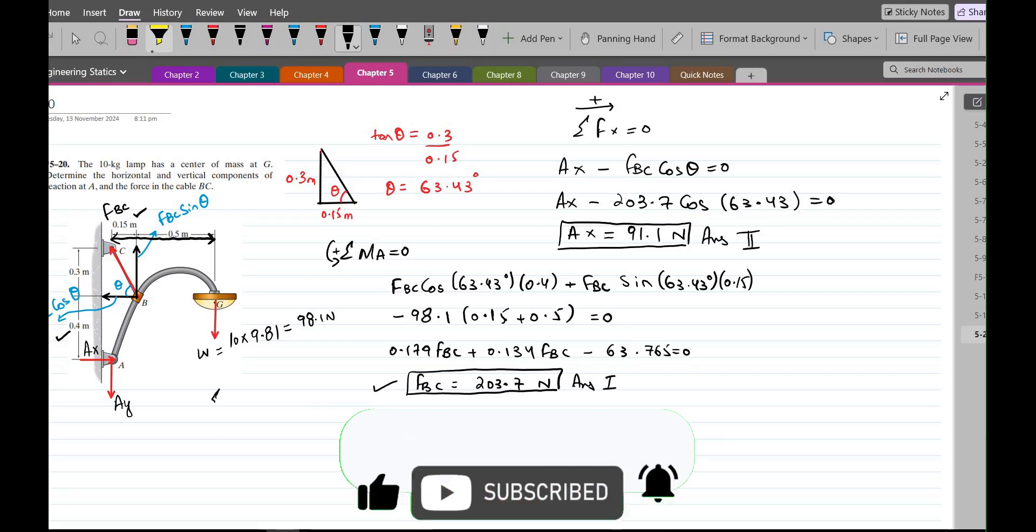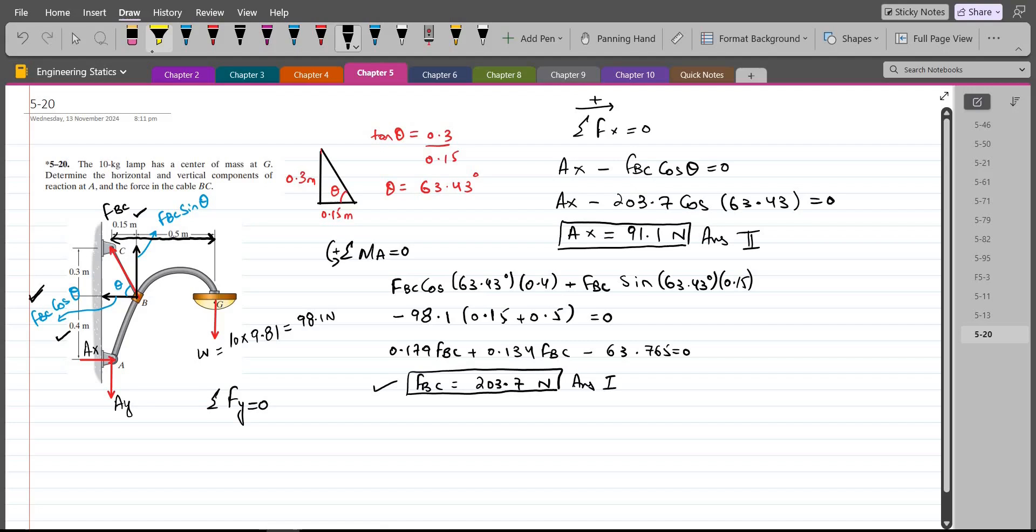And now for the AY force we can do summation of forces in y direction equals to 0. I am considering upward direction as positive. So we have negative AY plus FBC sin theta minus the weight force which is 98.1 Newton equals to 0. So upon substituting the values we have negative AY plus FBC which is 203.7 Newton into sin 63.43 degrees minus 98.1 equals to 0. So from here AY comes out to be 84.1 Newton.